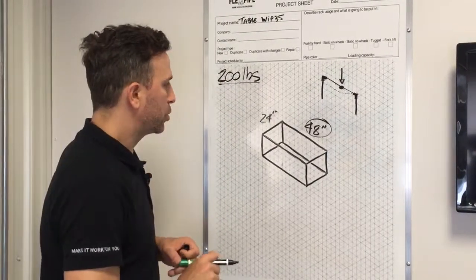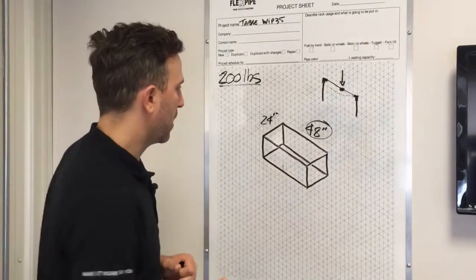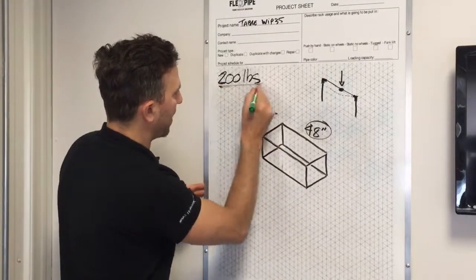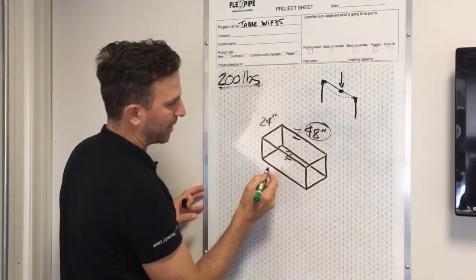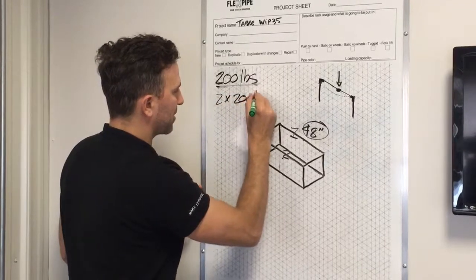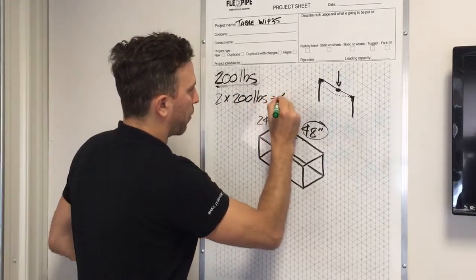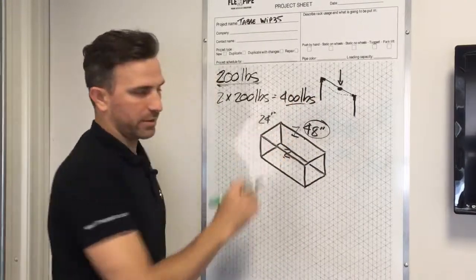So if you use that, you should have the risk margin. So you take 200 pounds and you multiply that amount by number of tubes and here we have two, so that would be two times 200 pounds and that would be 400 pounds. That would be your maximum loading capacity on this structure.